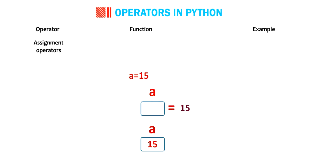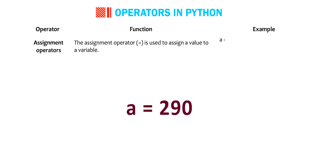Operator. Assignment operators. Function. The assignment operator is used to assign a value to a variable. Example. A equals to 290. The value 290 is assigned to the variable a.